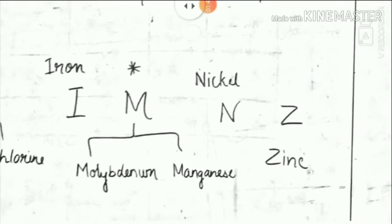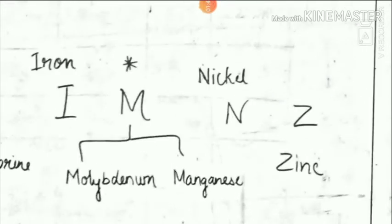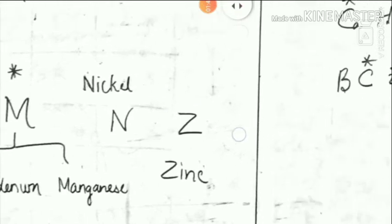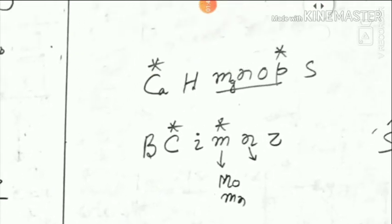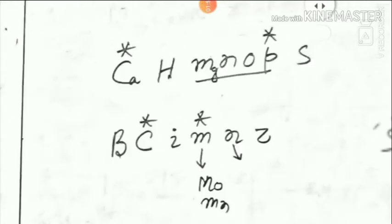Yeh ho gaya do type mein divisions ki, kaun zyada amount mein chahiye, kisko small amount mein chahiye. Otherwise, isko is tarike se yaad rakhe: C A H M G N O P S, star means do do bar aayega, aur yeh mein B C I M N Z. Is mein bhi M do bar aayega, yeh hoga molybdenum, yeh ho gaya hai manganese.